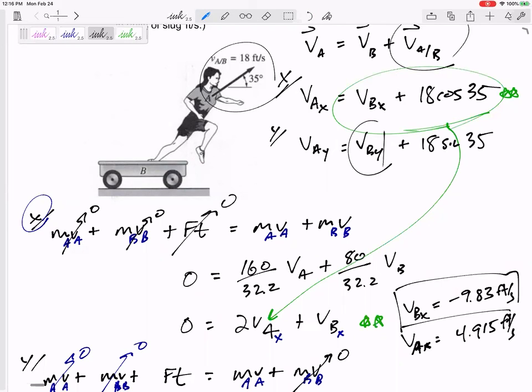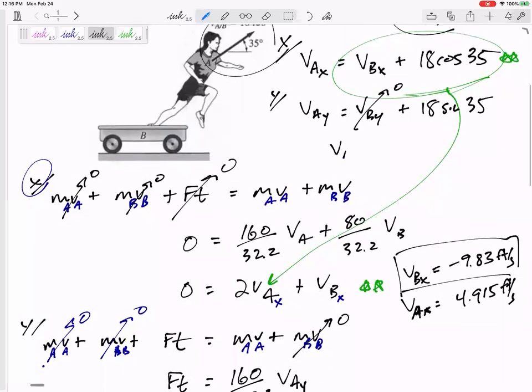va y equals vb y plus va/b in the y. What is the real velocity in the y direction? Zero. So actually the relative velocity in the y is the actual velocity in the y because that b, that reference frame, is not moving in the y. vb y is zero.